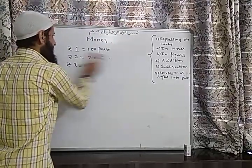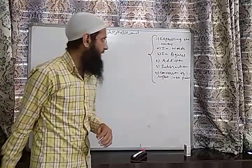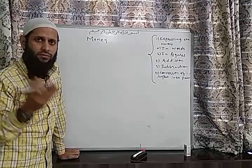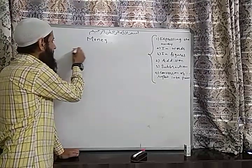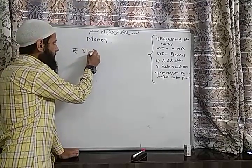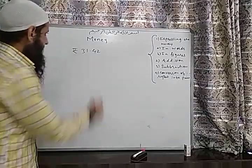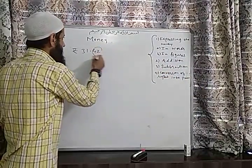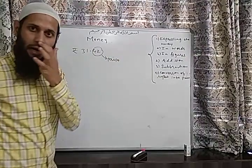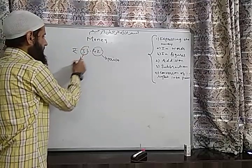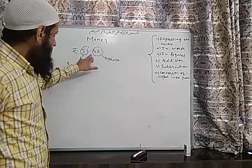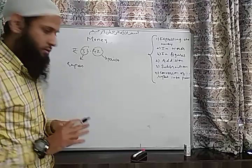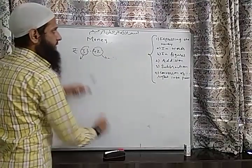We can express money in the form of words and figures. Figures means numbers. For example, if I write 31.42 — see, there is a point. Everything at the right side of the point is called paise, and the number at the left side of the point is called rupees. So the number at the right side of the point is paise and the number at the left side of the point is rupees.